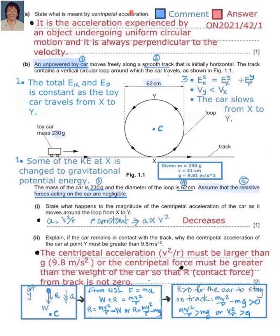This is the October/November 2021 variant for two questions. For question 1a, worth 1 mark, they ask what is meant by centripetal acceleration. The word 'centri' means towards the center. Centripetal acceleration is the acceleration experienced by an object undergoing uniform circular motion, and the acceleration is always perpendicular to the velocity, or directed towards the center of the circle.